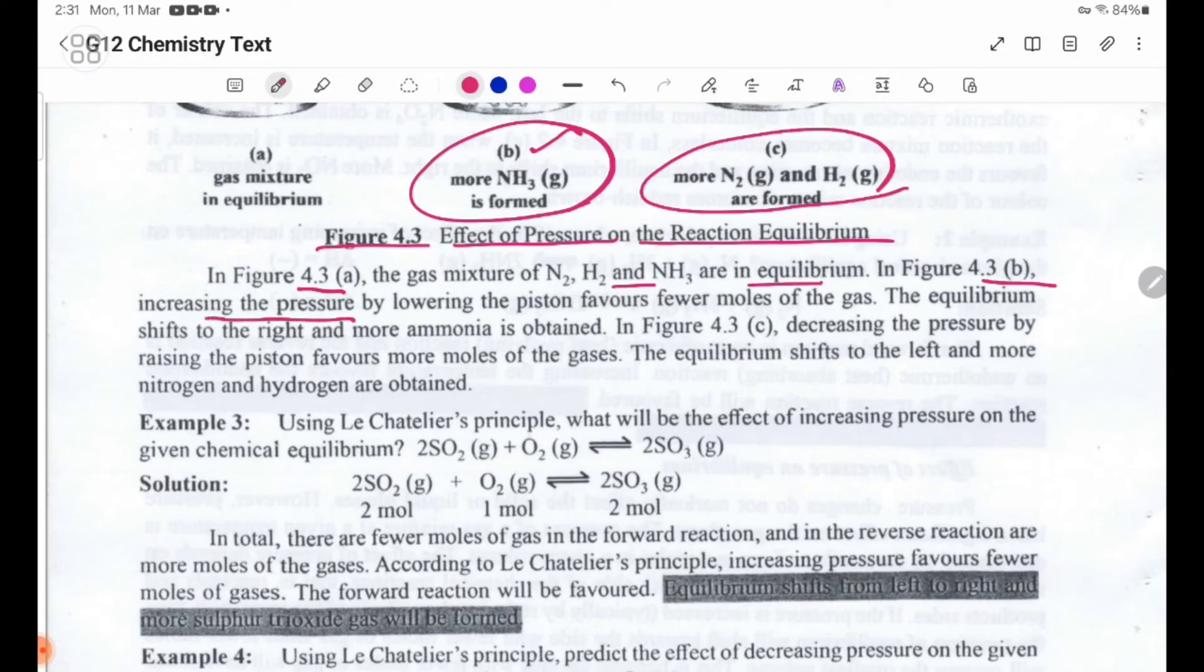Lowering the piston favors fewer moles of the gases. Equilibrium shifts to the right, and more ammonia is formed.